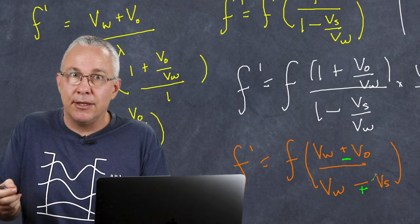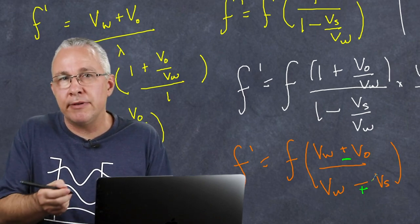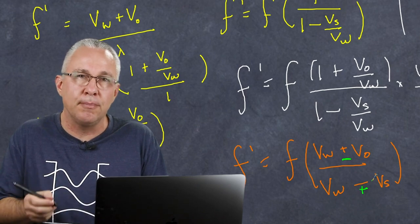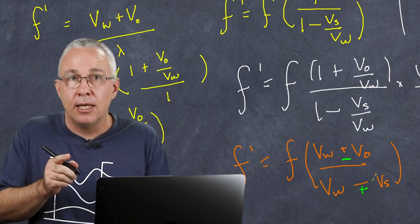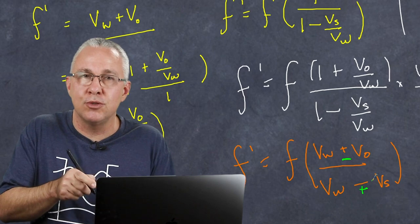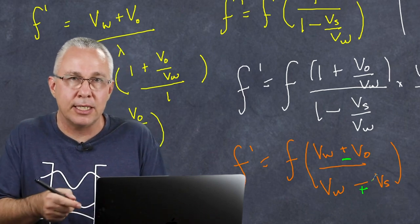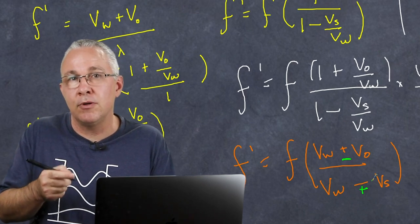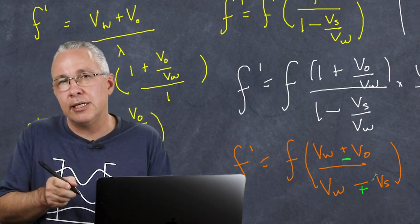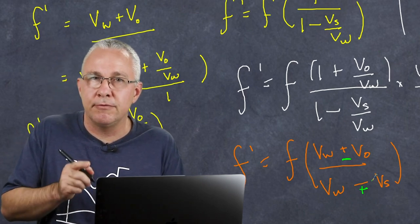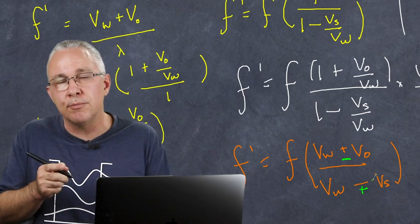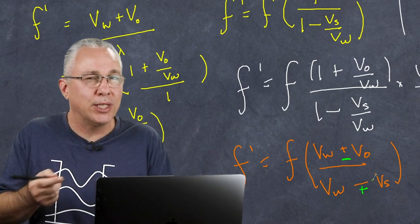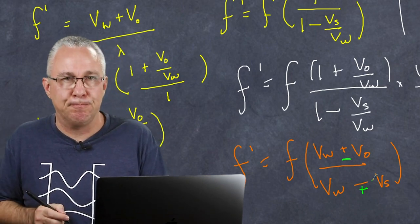So there you have it — the derivation using the wave equation and some simple kinematics to determine the Doppler-Shift formula. This of course applies to the motion of objects with sound. This is not the same as the Doppler shift in terms of light, because with light the speed of light is constant for all observers no matter what the observer or source is doing, and that means we're going to need a different formula.